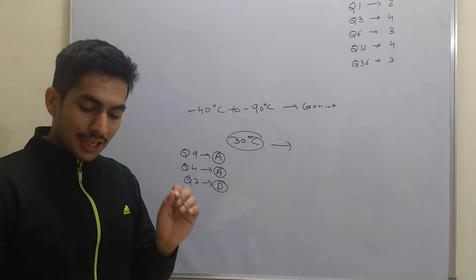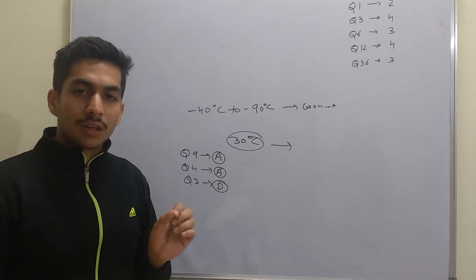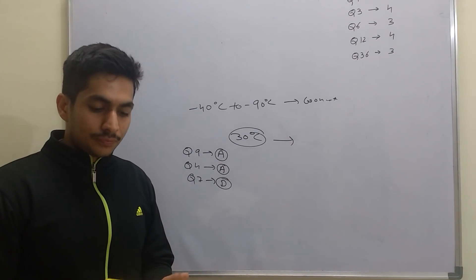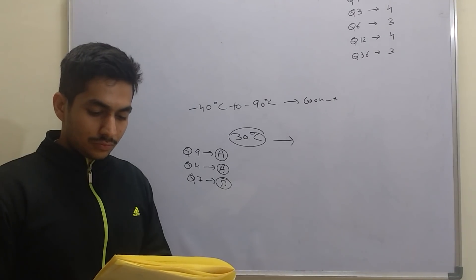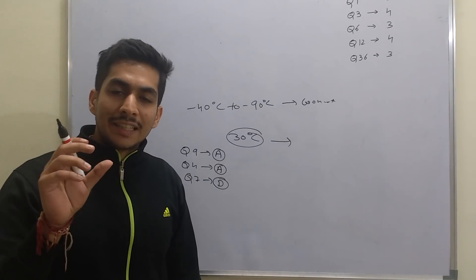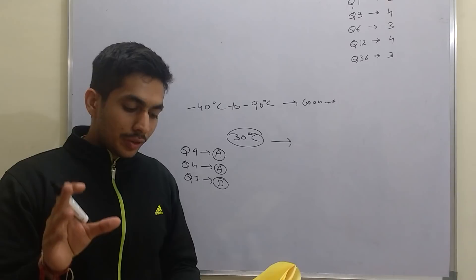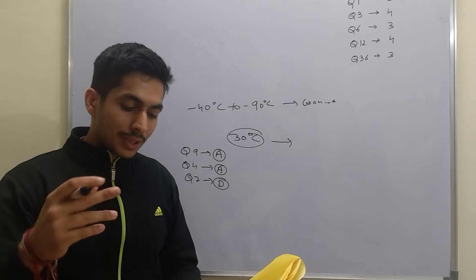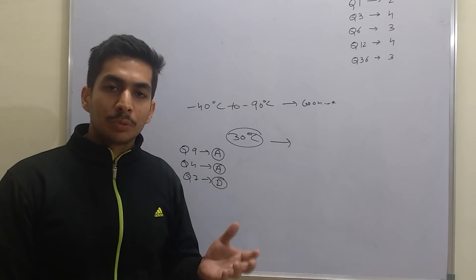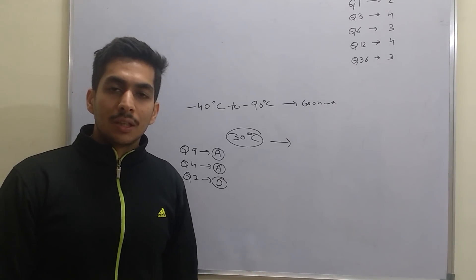Option D states: 'Measurement of one variable in an atomic system can affect subsequent measurements of certain other variables.' That is absolutely true - this is predicted by the uncertainty principle. If you try to find the exact position of an electron, you cannot find the momentum, and vice versa. Both cannot be determined simultaneously. So option D is correct and is not the answer we are looking for.